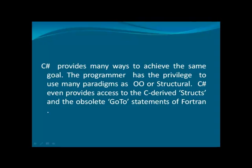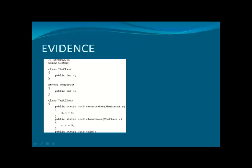C-Sharp provides many ways to achieve the same goal. Programmers have the privilege to use many paradigms such as object-oriented or structural. C-Sharp even provides access to C-derived structs and the obsolete code statements of Fortran. The evidence slot portrays this factor clearly. This particular code segment explains the way individual structs of the language have been developed to enhance and prove the multiplicity of C-Sharp.